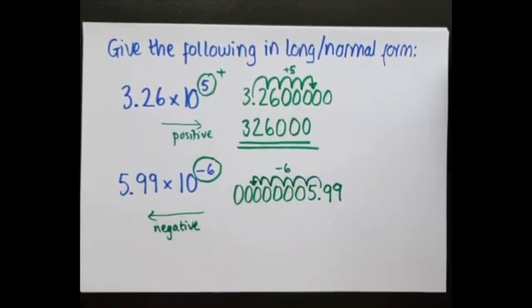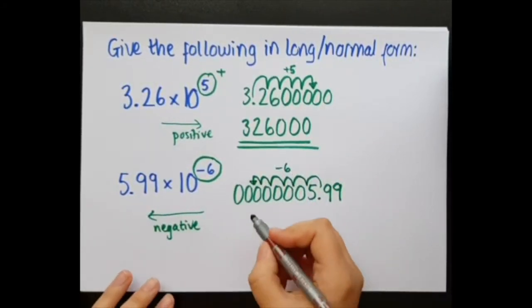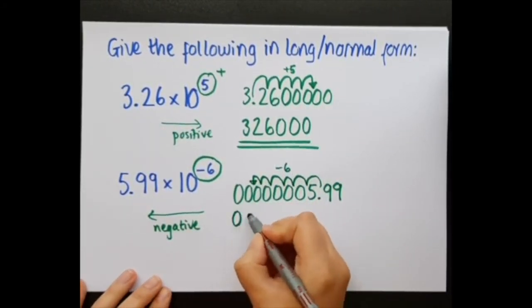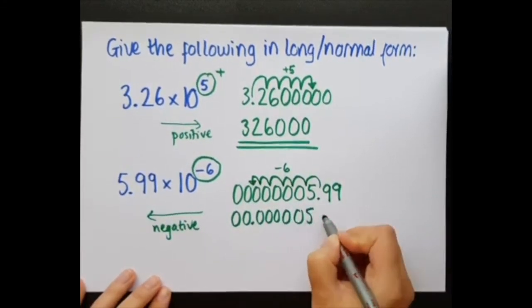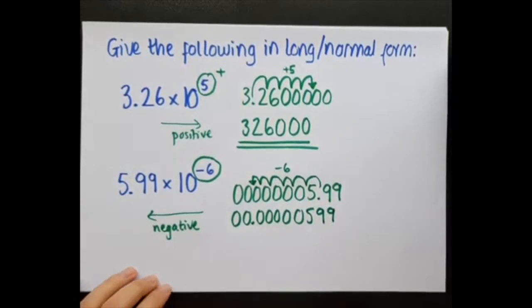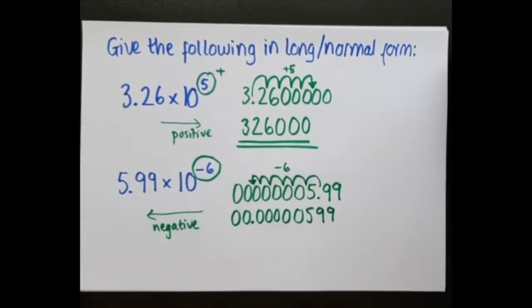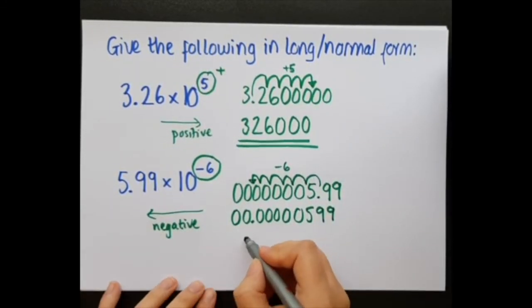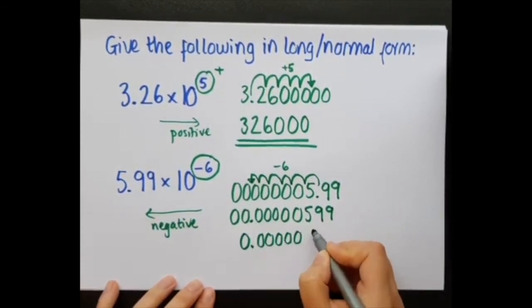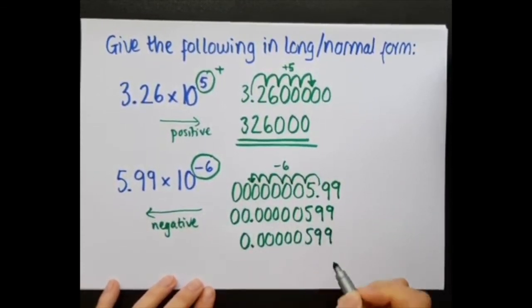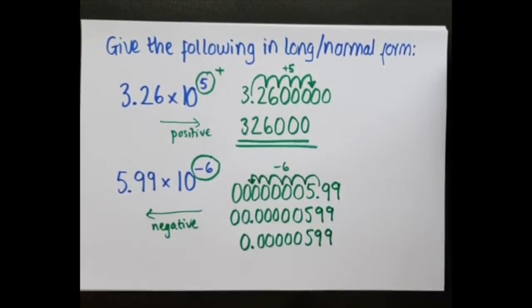And that's six places to the left. So I rewrite this with my decimal point there. And you can see I've got an extra zero there. So what I could do is just ignore it and just have that one zero in front of the decimal place. And that is a very small number that we have gotten from standard form.